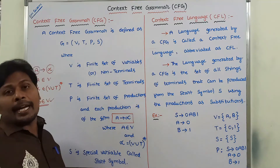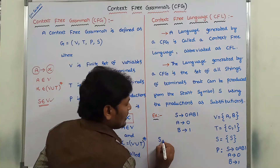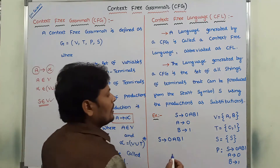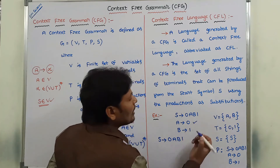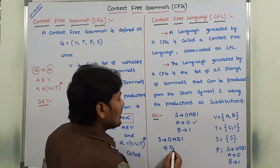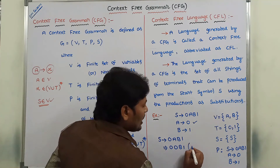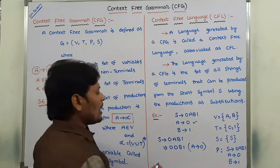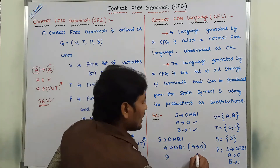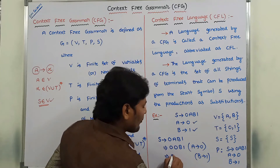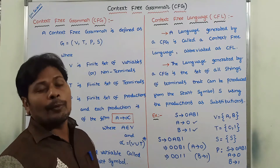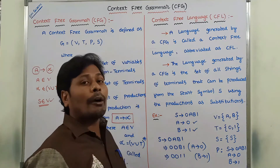What is the language generated by this context-free grammar? Starting from S tends to 0AB1, we substitute 0 in place of A using the production A tends to 0, giving us 00B1. Then in place of B, we substitute 1 using the production B tends to 1, giving us 0011. This terminal string 0011 is obtained from the start symbol S by repeatedly substituting the productions.